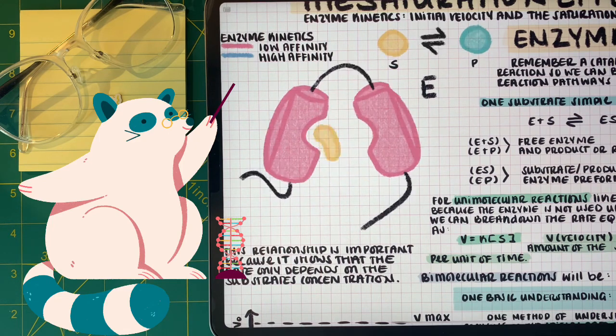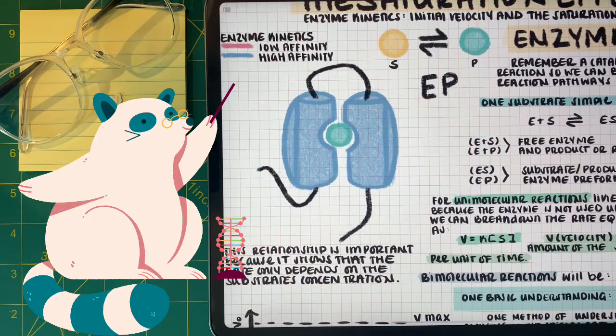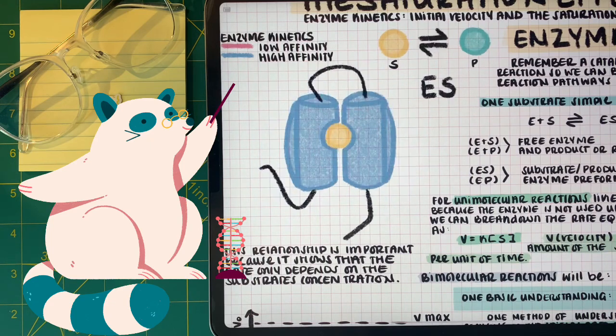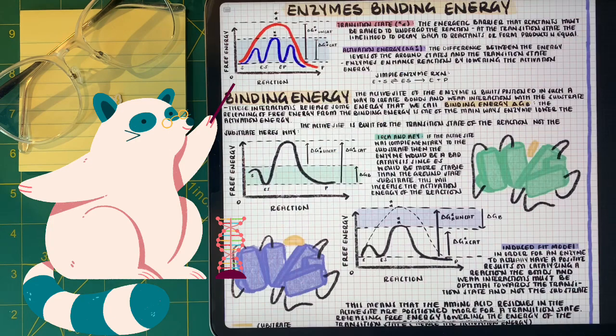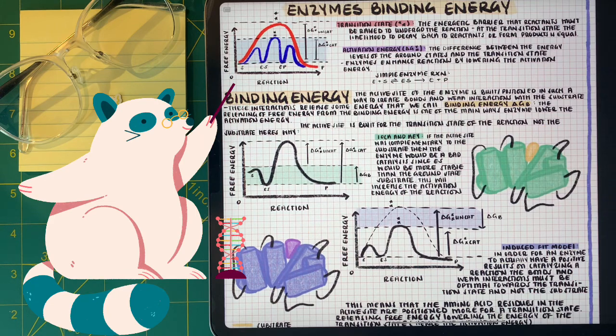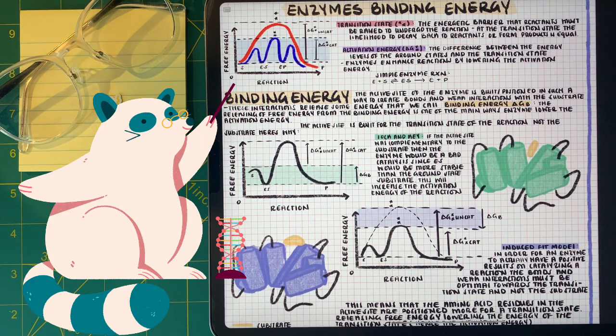So we saw with the animation that the enzyme forms an enzyme substrate complex, an enzyme product complex, and then releases the product through that reversible interaction. But how do the interactions with the enzyme and substrate lower the activation energy?